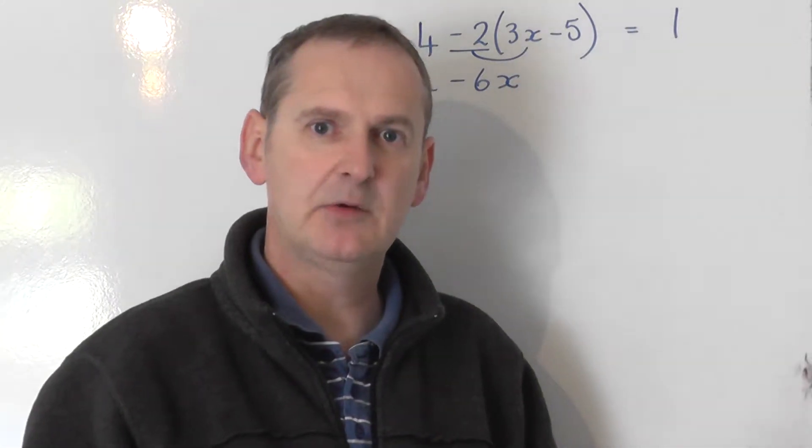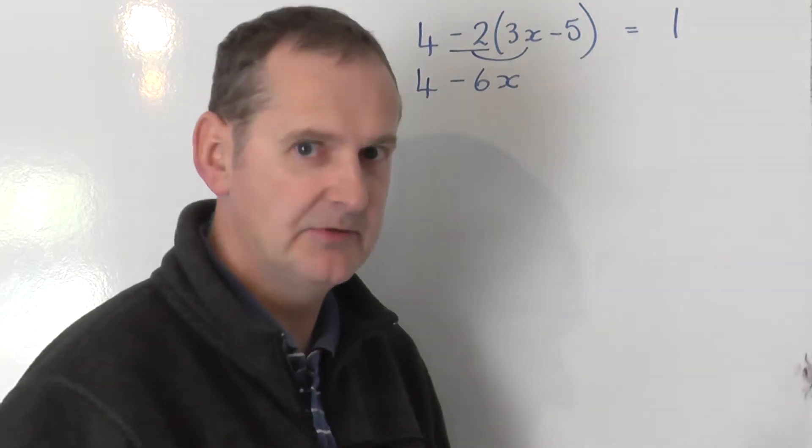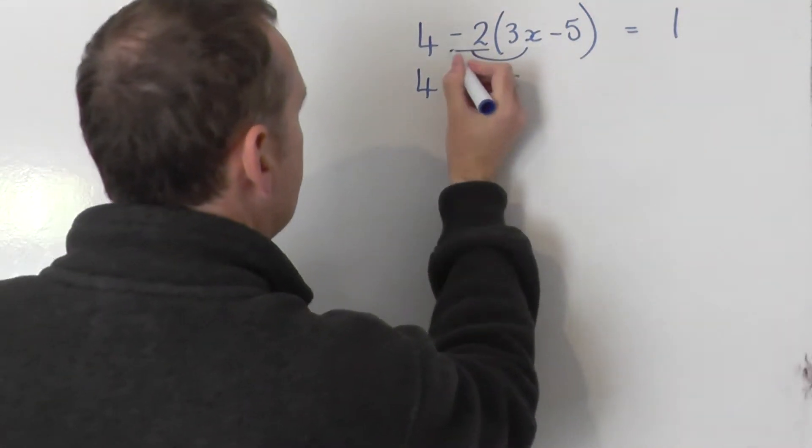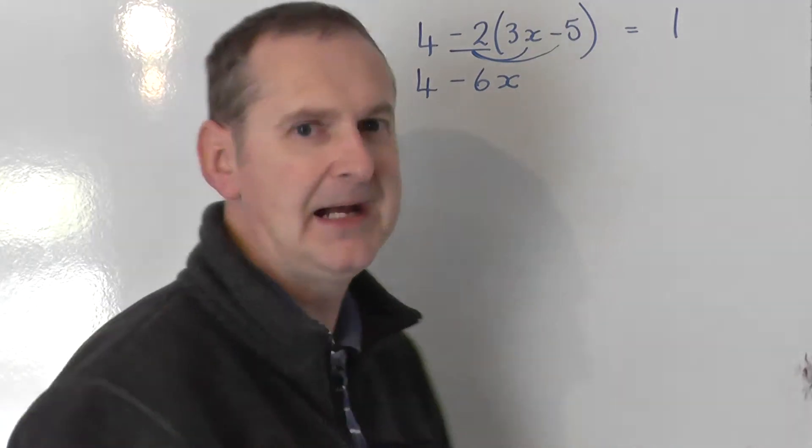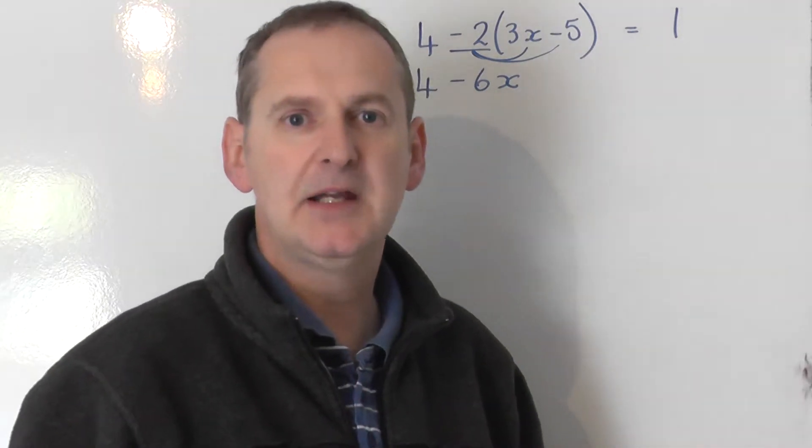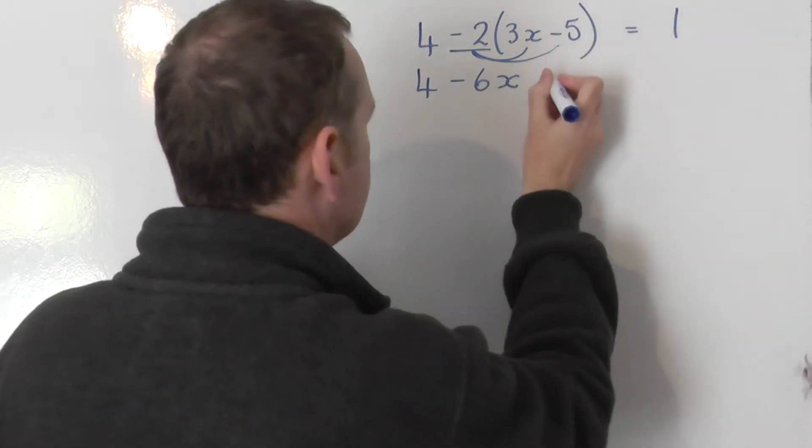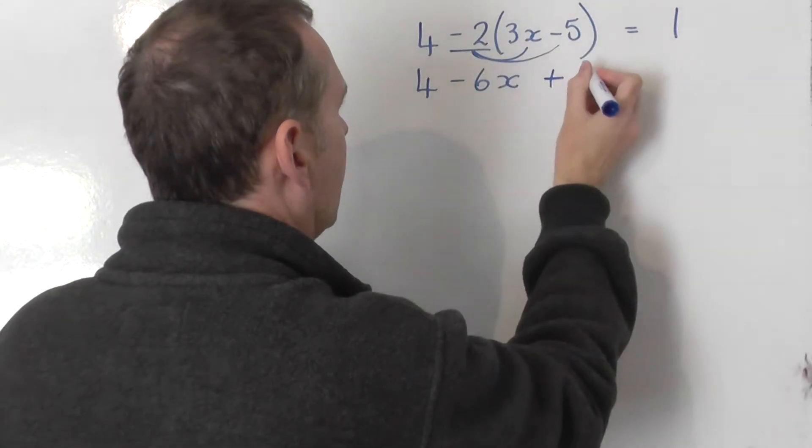And now this is where the mistake would happen, if there's a mistake going to happen. You'd say minus 2 multiplied by minus 5. A minus times a minus is a positive. 2 times 5 is 10.